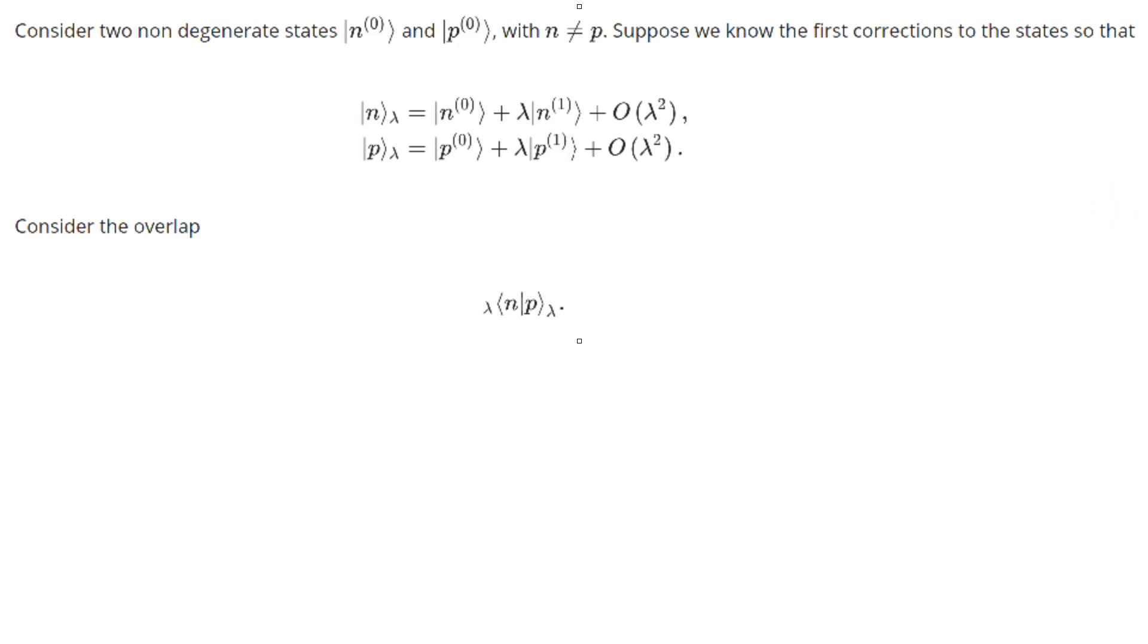All right, guys. Here we're going to do another example. Let's look at this one. Consider two non-degenerate eigenstates. So non-degenerate just means that EN0 does not equal EM0. That's what non-degenerate means. N0 and P0. Remember, N and P just refer to two different eigenstates of the system.